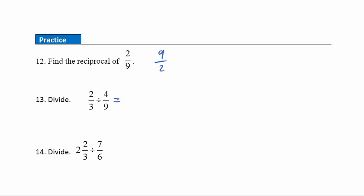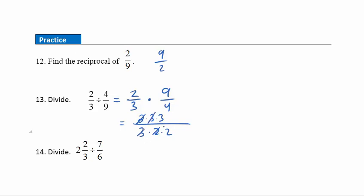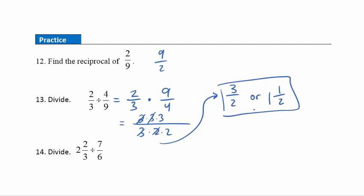Question 13: first we'll change this to multiplication using skip, flip, multiply — skip the first one, flip the second one, and turn it to multiplication. Once there, we can factor across the numerator: 2 times 3 times 3. Across the denominator: 3 times 2 times 2. Divide out common factors of 2 and 3. Our final simplified answer is 3/2, which is a good answer. Or your instructor might want you to write it as a mixed number: 2 goes into 3 one whole time with a remainder of 1, giving 1 and 1/2. Either answer is correct.